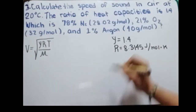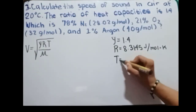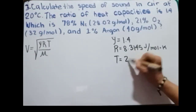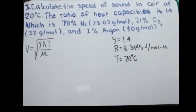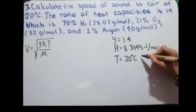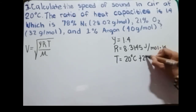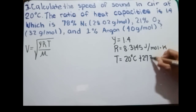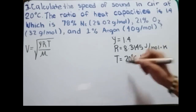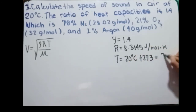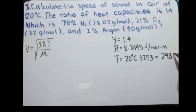The ideal gas constant R is equal to 8.3145 joules per mole times kelvin. The temperature in this problem is 20 degrees Celsius, but we need temperature in kelvin. So we add 273 to get 293 kelvin.